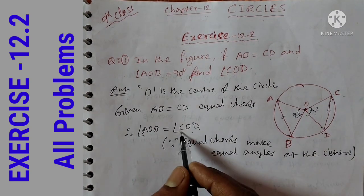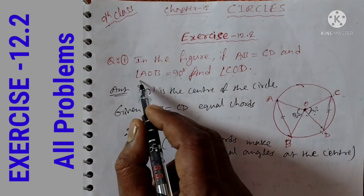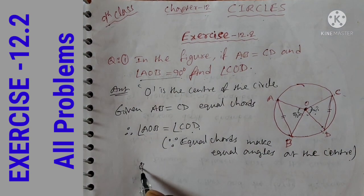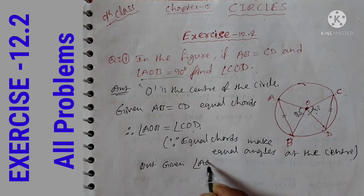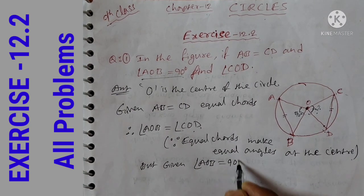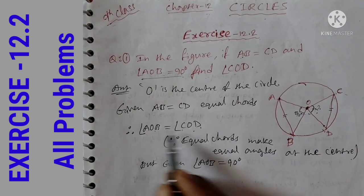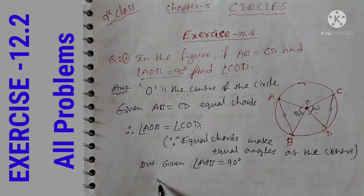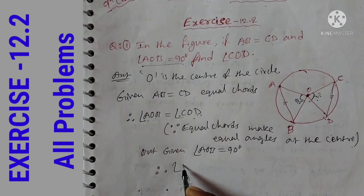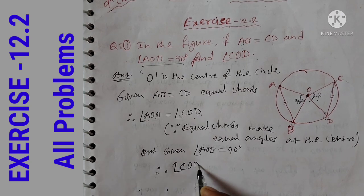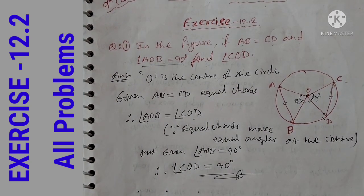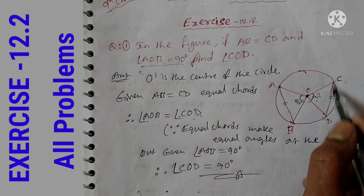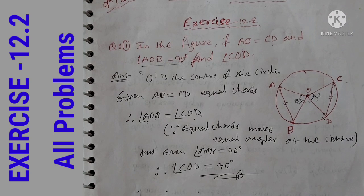Since equal chords make equal angles at the center, and we are given angle AOB is equal to 90 degrees, therefore angle COD is equal to 90 degrees. Both angles are equal because we have equal chords at the center of the circle.